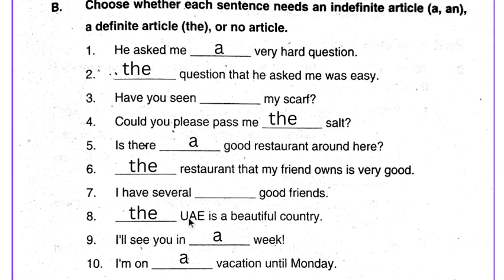'The UAE is a beautiful country.' 'I'll see you in a week.' 'I am on a vacation until Monday.' A can also be used here, but it wouldn't cause a problem if you don't use an article.